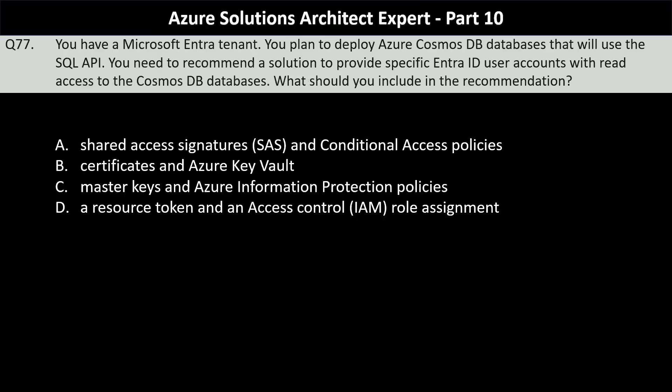You have a Microsoft Entra tenant and plan to deploy Azure Cosmos DB databases that will use the SQL API. You need to recommend a solution to provide specific Entra ID user accounts with read access to the Cosmos DB databases. Your options are: Shared Access Signature and Conditional Access Policies; Certificates and Azure Key Vault; Master Keys and Azure Information Protection Policies; or a resource token and an access control IAM role assignment.